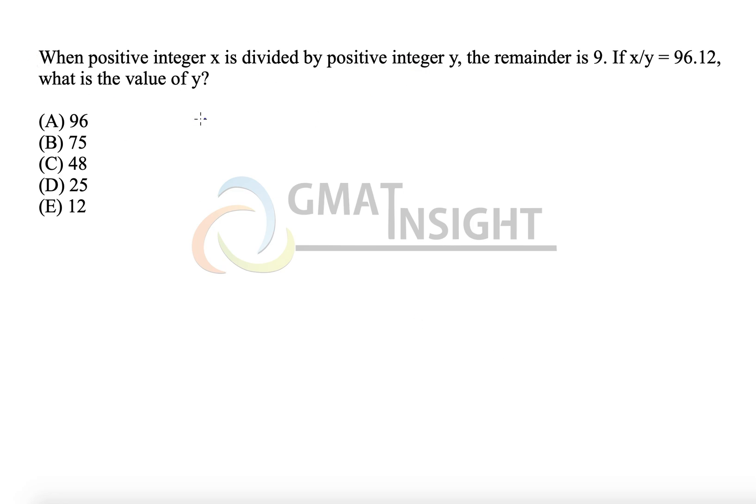When positive integer x is divided by y, the remainder is equal to 9. And if x upon y actually is equal to 96.12. So, to understand this question, let's do one quick exercise.